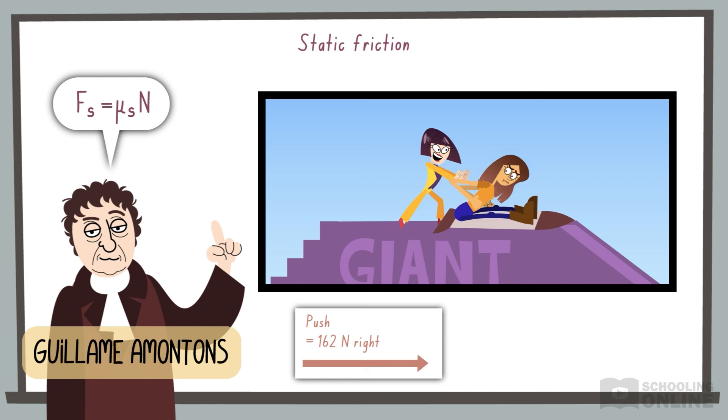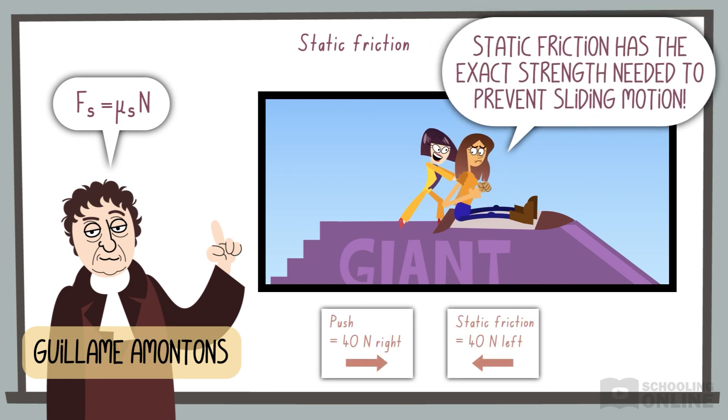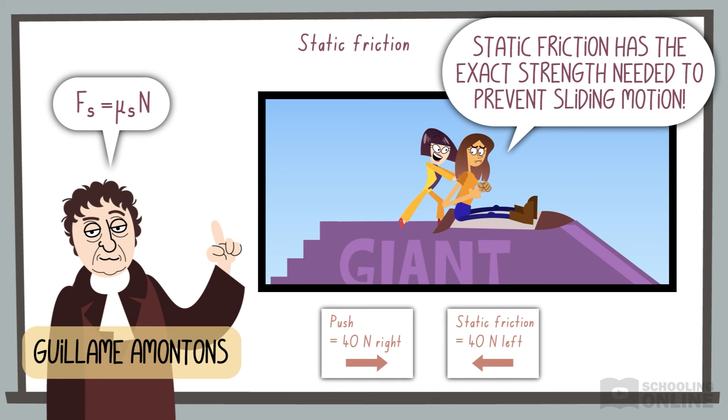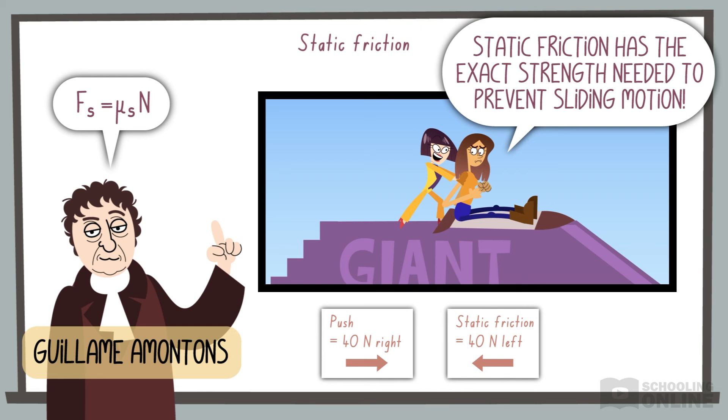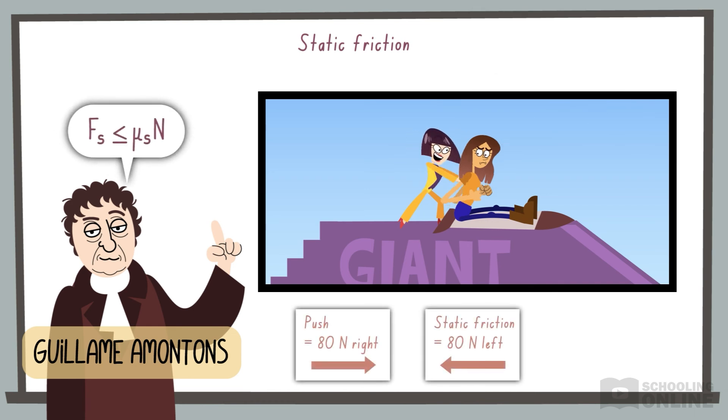As mentioned earlier, this equation gives you the upper limit for static friction. In most cases, the actual force is smaller because it only needs to oppose the net applied force. This brings us to another version of this formula. The less than or equal to sign reminds us that static friction opposes the applied force until it reaches a maximum value, which is given by μs times N.